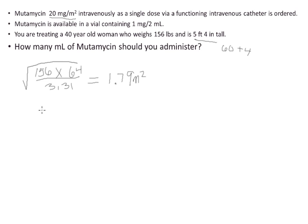Now, we're going to treat this problem just like we did with heparin. So we'll take the ordered dose that is based on this patient's body surface area and multiply it by the body surface area in order to cancel the square meters. So the order is 20 milligrams per meter squared. I'll multiply that times 1.79 meters squared.